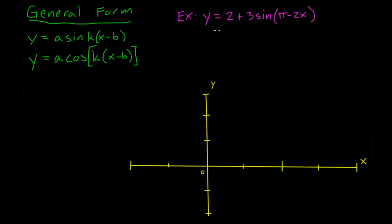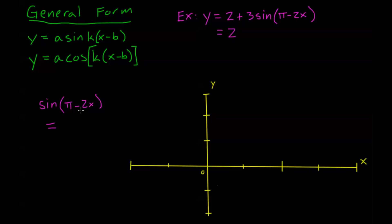This is the same as y equals 2 plus 3 times... Now the first thing I need to note is that in my general form, I have x in the front, x is positive, and x has a coefficient of 1. That is very important. So I need to factor out any k, and k needs to be a positive number. We can always ensure k is positive by using the even and odd properties of sine and cosine. Since sine is an odd function, sine of pi minus 2x is the same as negative sine of the positive value, so I can pull out a negative in front of the sine.